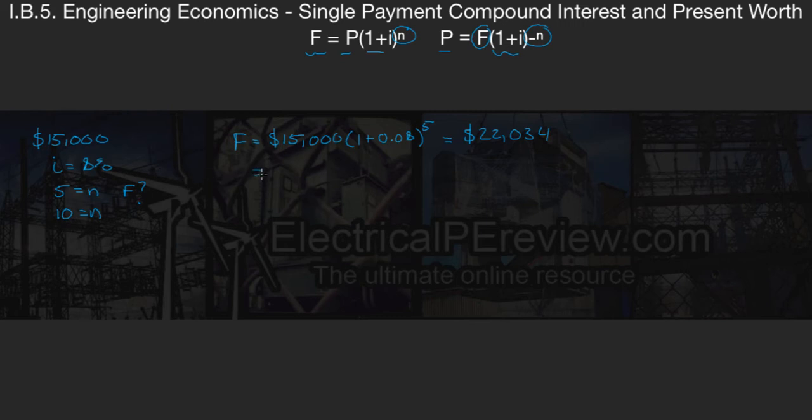So just like before, we've got a present worth value of the same $15,000 that he invested, times 1 plus our interest amount. This time, N equals 10. We punch that in the calculator, and we come up with, after 10 years, our investor is going to withdraw a total of $32,384.